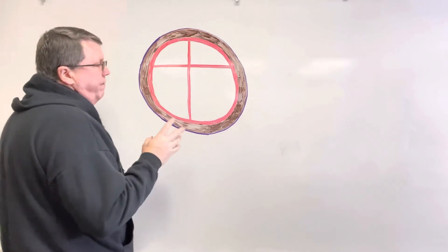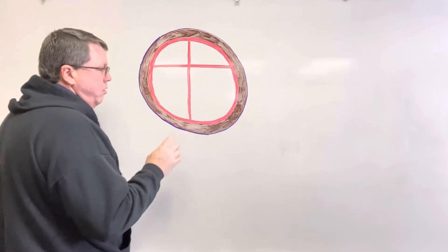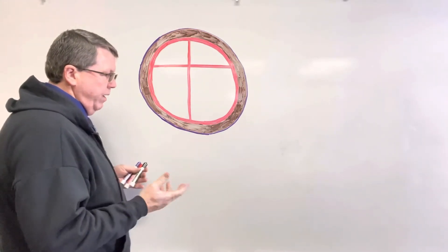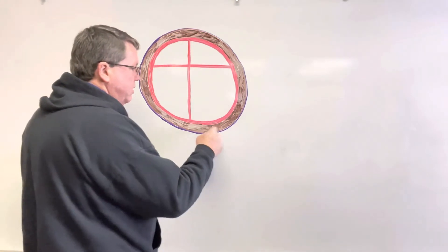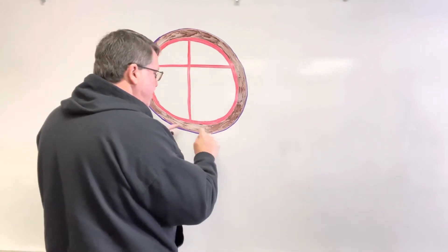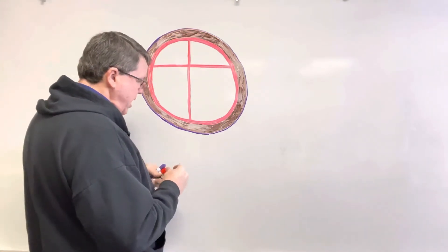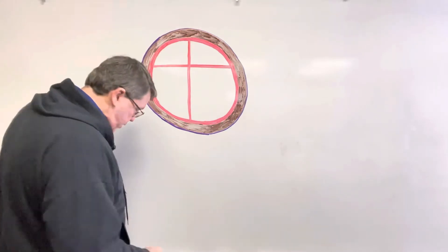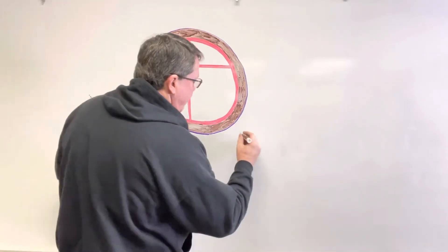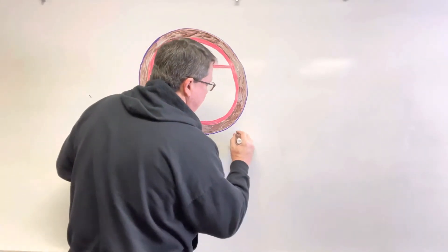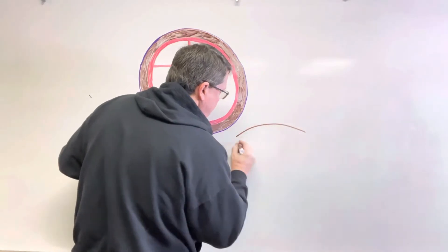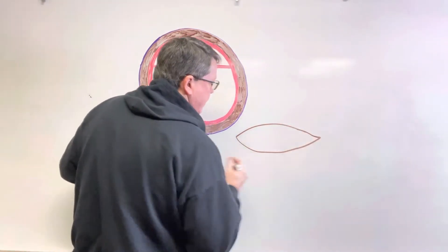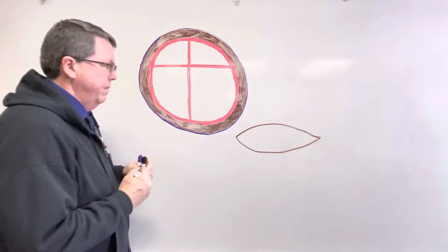So here's what's going to happen: when you have a thyroid hormone, it's going to go to my myocardium right here, and what it's going to do is enter into cells. I'm just going to draw a muscle cell — there's my cardiac muscle cell.